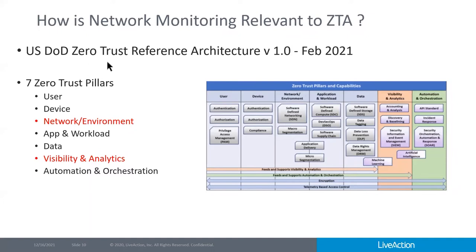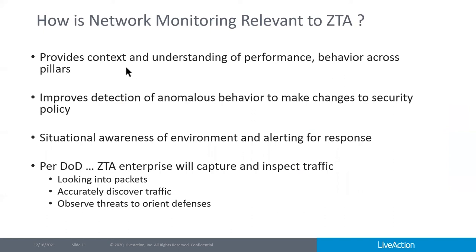A DOD document from February 2021 outlines seven zero trust pillars, with networking and environment and visibility and analytics being key ones. It specifically addresses understanding the context and performance of network pillars, providing anomalous behavior detection capability to adjust security policy, and maintaining general situational awareness. The document also talks about capturing and inspecting traffic — discovering what types of traffic exist — primarily to observe threats and orient defenses accordingly.